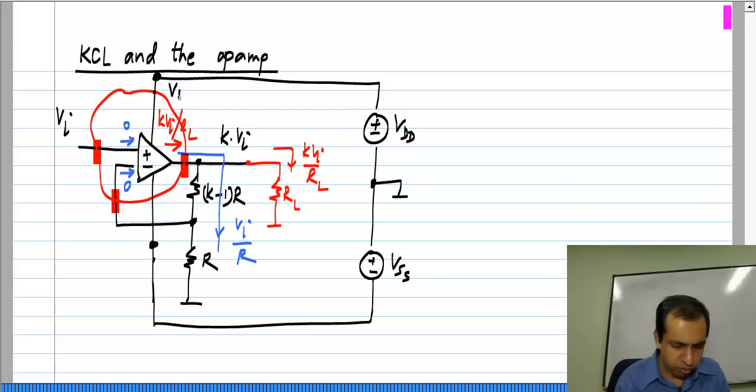The positive supply is connected to Vdd, the negative supply to minus Vss with respect to this ground. So the currents through these are clearly not zero. The current flows through the supply terminals, and that is how the sum of these currents will get balanced. Essentially, the current that is coming out of the op amp is coming out of the supply terminals of the op amp.